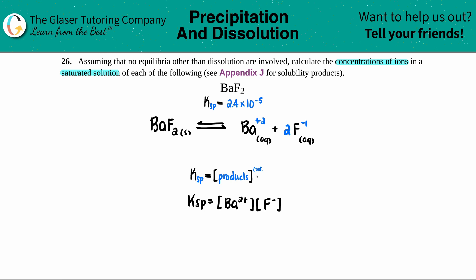And now just make sure that you're raising it to their coefficients. There was no coefficient in front of the barium, that means there was only one of them. And there was a two in front of the fluorine. So the barium can be raised to the first, but the fluorine has to be raised to the second.